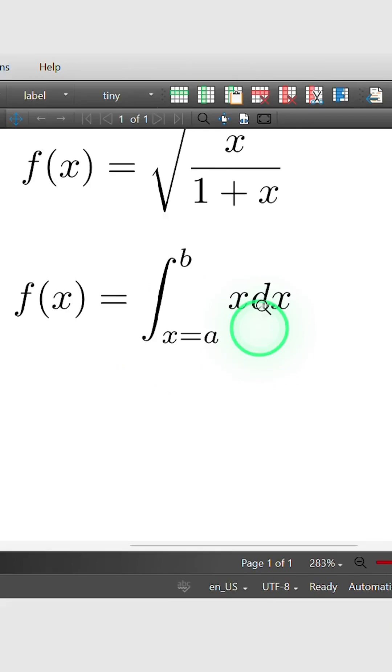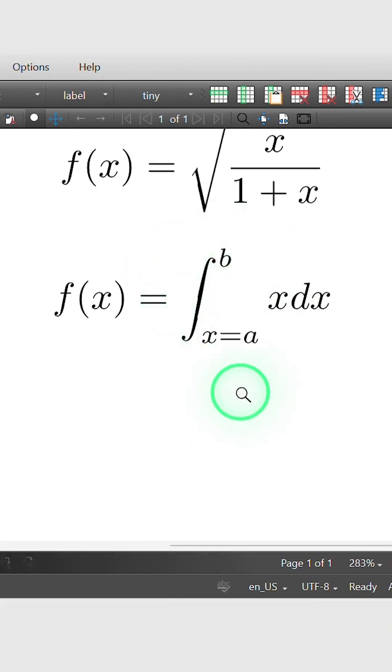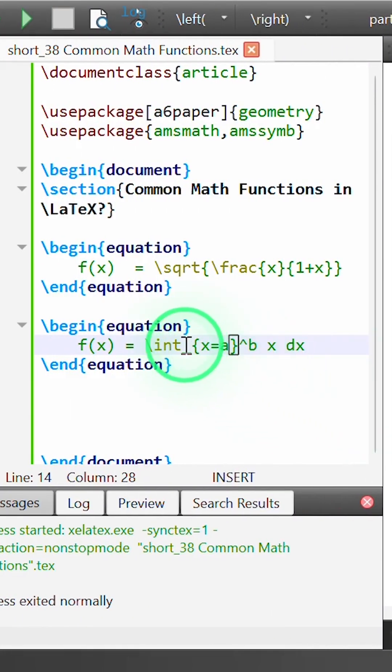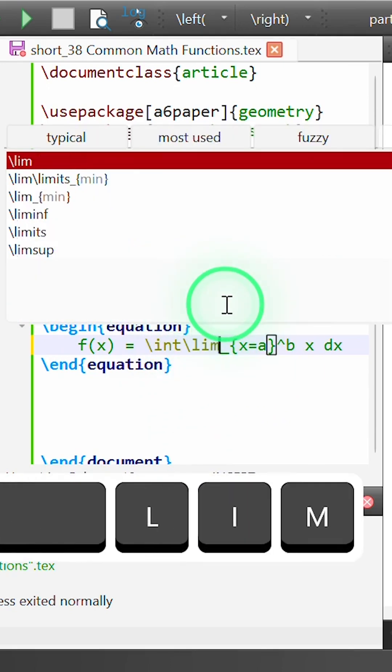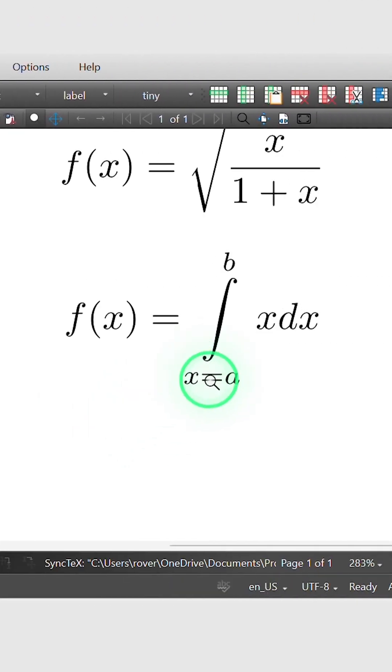you can see we get our equation, but there are a couple of things we could do to improve this. The first thing is instead of using the underscore and caret by themselves, if I precede these terms with the command \limits and rebuild our output, you'll see this will actually move those expressions x equals a and b to directly below and above the integral symbol.